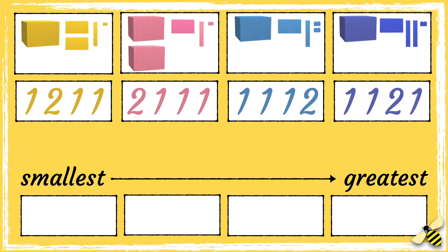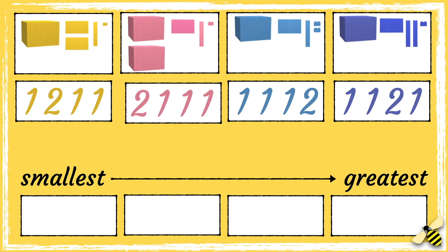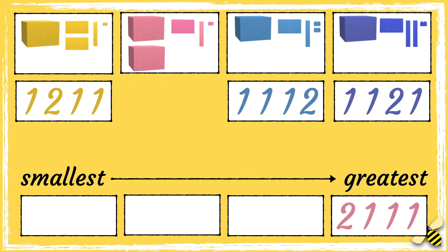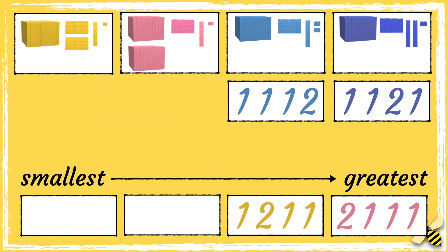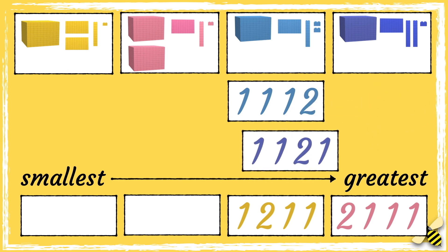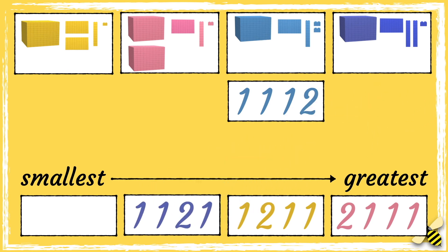So we can see that the pink number has the most thousands, so this is the largest number. The yellow number then has the most hundreds, so this is the second largest number. The purple number has the most tens, so this is the third largest number, and therefore the smallest number is the blue number.